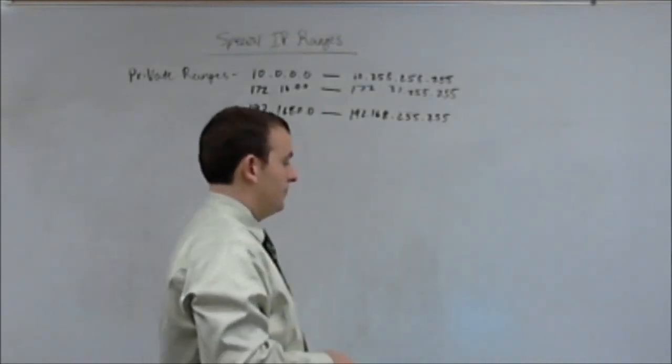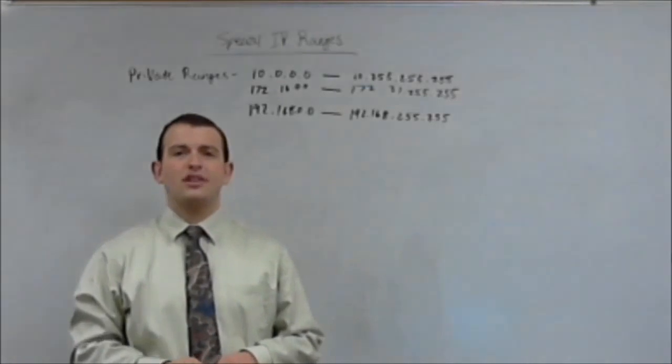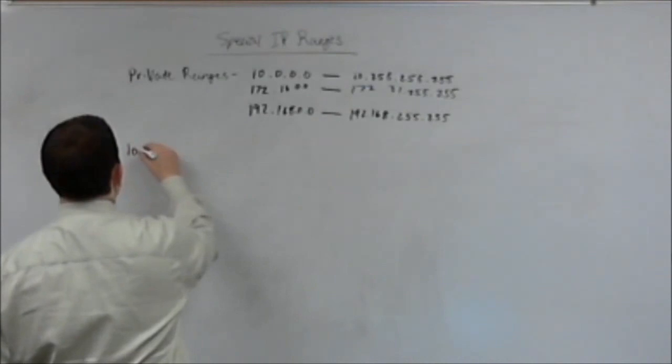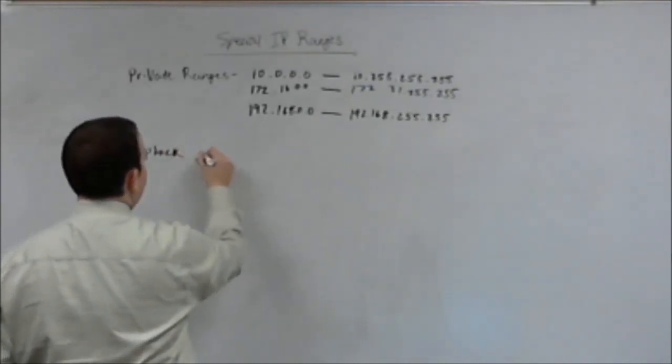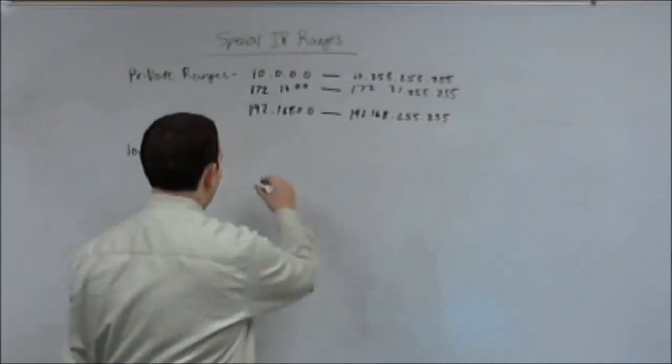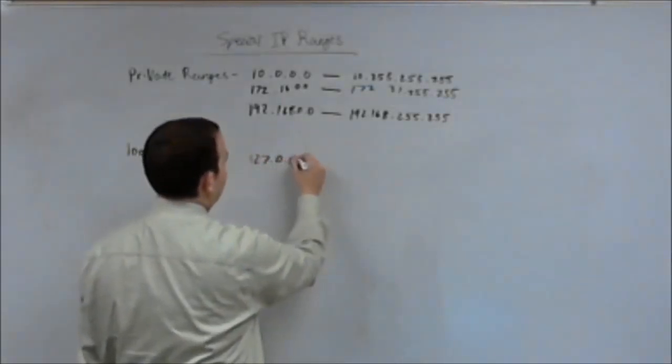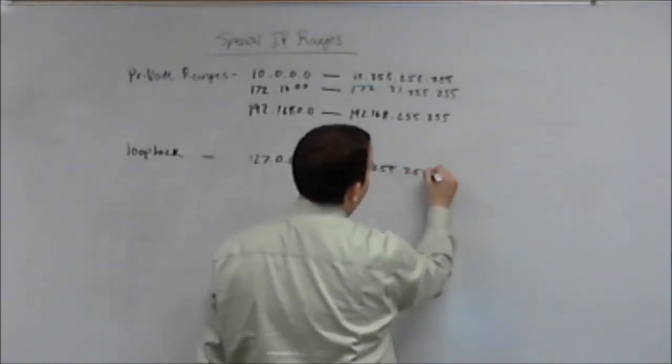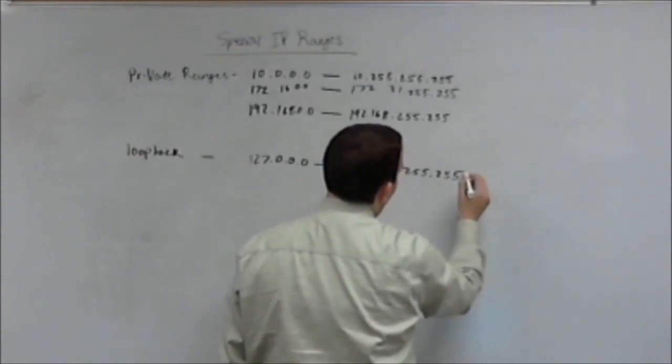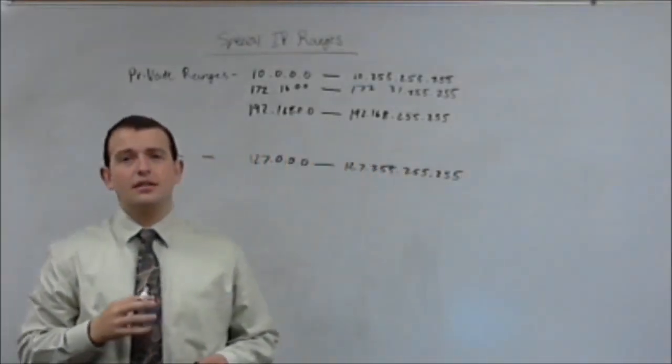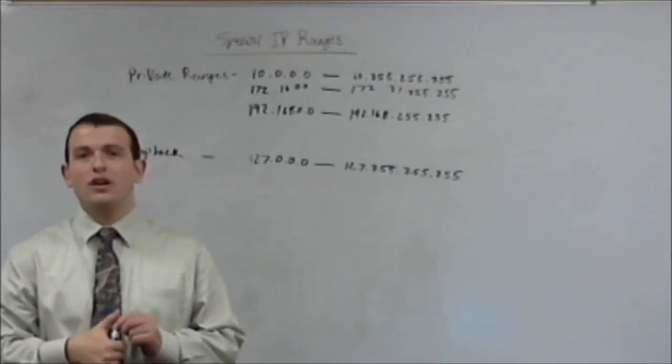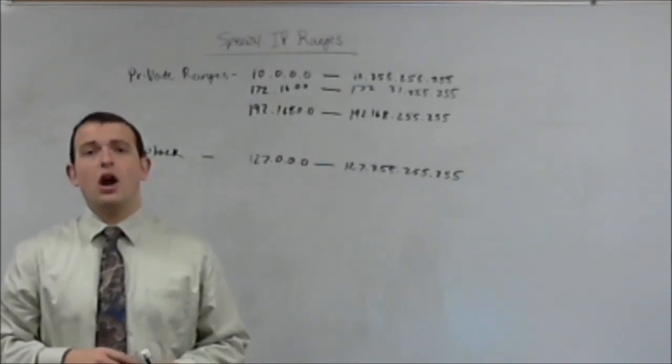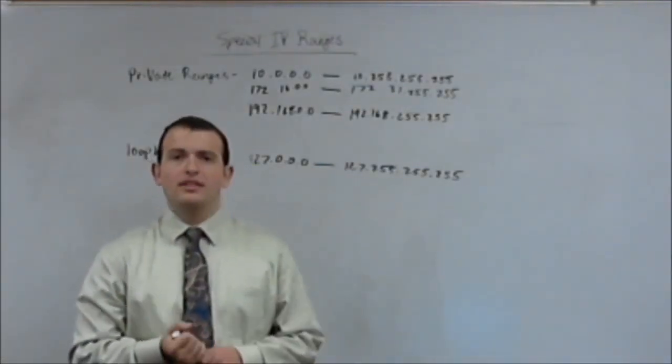The next reserved set of IP addresses we're going to learn is your localhost set or your loopback. The loopback range is reserved to 127.0.0.0 all the way up to 127.255.255.255. What this range does is if you ping or you communicate with this range whatsoever, it will be communicating with the computer that the packet originated from. It talks to itself. It loops back. That's why we call it the loopback.